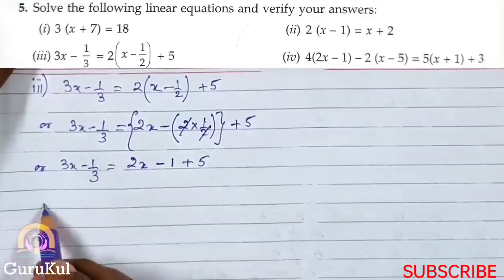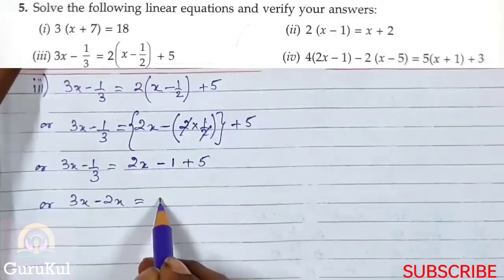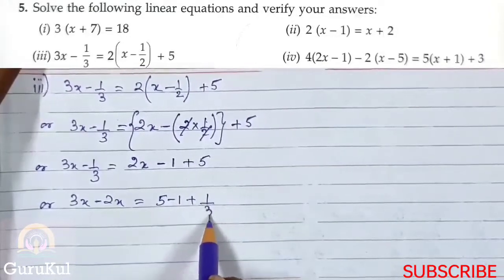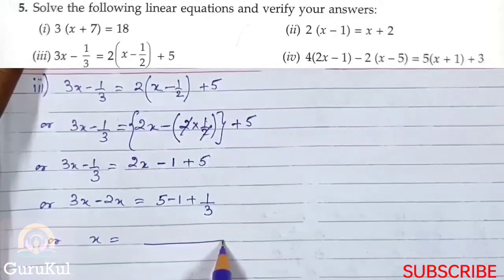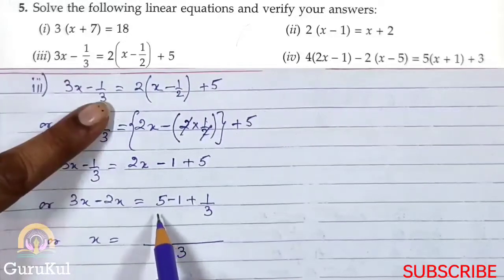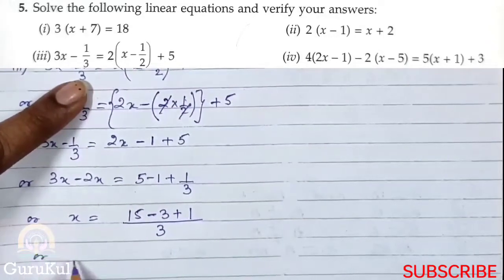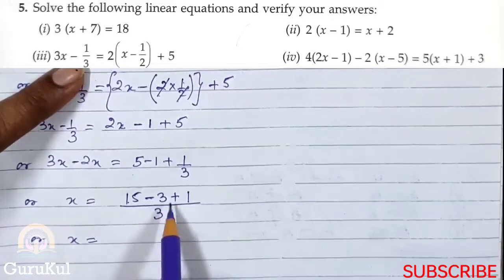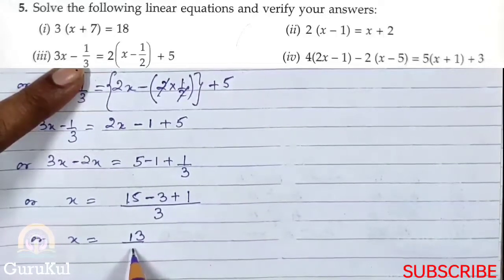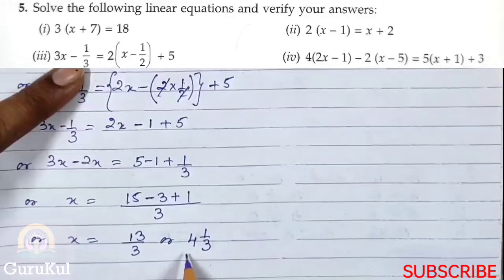Now we bring all x terms to the left-hand side: 3x minus 2x is equal to 5 minus 1 plus 1 by 3. And x is equal to — taking LCM, the denominator is 3 — so 1 threes are 3, 5 threes are 15, giving 15 minus 3 plus 1 over 3. So 15 minus 3 is 12, and 12 plus 1 is 13 by 3. So x is equal to 13 by 3.